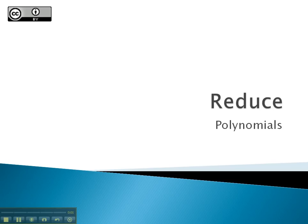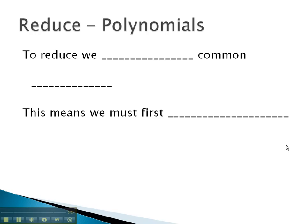In this video, we will look at reducing rational expressions made up of several polynomials. We remember that to reduce, we divide out common factors. What this means to us is we must first factor the polynomial before we are allowed to do any reducing, just as with factoring fractions.